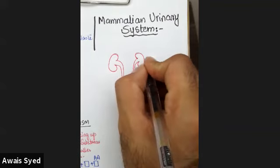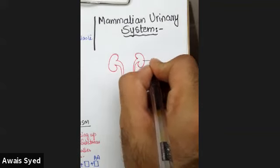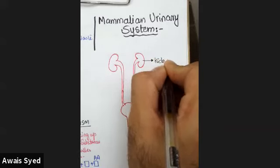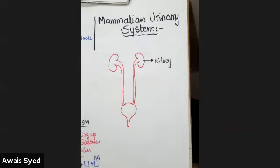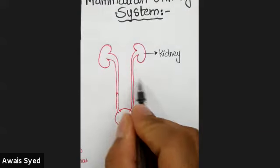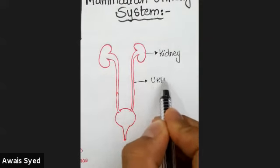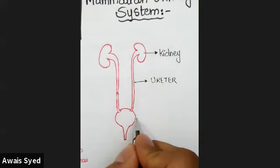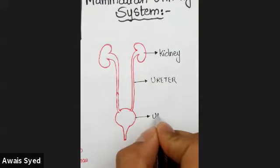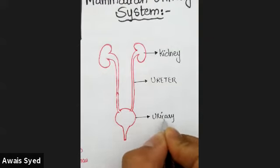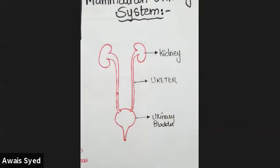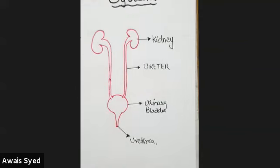So let's take a look at the structure. You have the excretory organ — the kidney. After the kidney, you have these ducts, which are actually the ureters. Then you have the urinary bladder, and the output duct from the urinary bladder is called the urethra. So follow this structure.